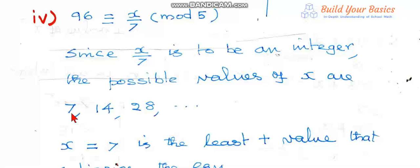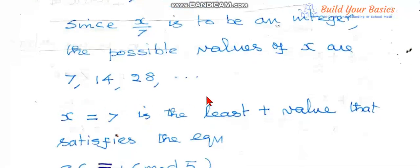It is the least value. So x equal to 7 is the least positive value. That is the required value of x.